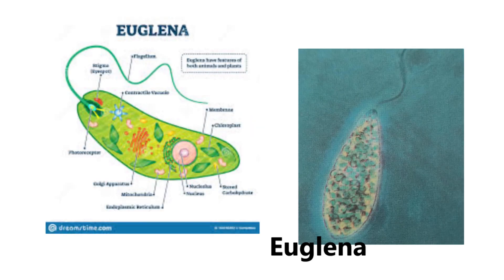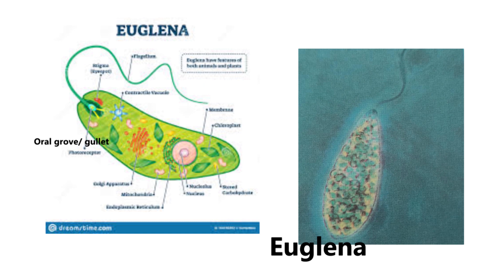Euglena has both animal-like and plant-like features. Its animal-like features are: it has a flagellum for locomotion and a gullet to take in food. Its plant-like feature is that it has chloroplasts and chlorophyll, so it photosynthesizes when there is sunlight. When there is no sunlight — in winter or dark conditions — it takes in food through its oral groove, feeding on other microscopic organisms using its gullet.